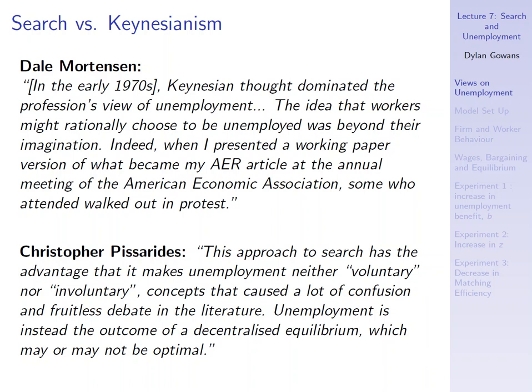Likewise, Christopher Pissarides, another Nobel Prize winner, said in his Nobel Prize lecture: 'This approach to search has the advantage that it makes unemployment neither voluntary nor involuntary — concepts that caused a lot of confusion and fruitless debate in the literature. Unemployment is instead the outcome of a decentralized equilibrium which may or may not be optimal.' They're downplaying the Keynesian idea that unemployment is a problem government must fix — it's just the result of a decentralized equilibrium, and optimally some people have to be searching.